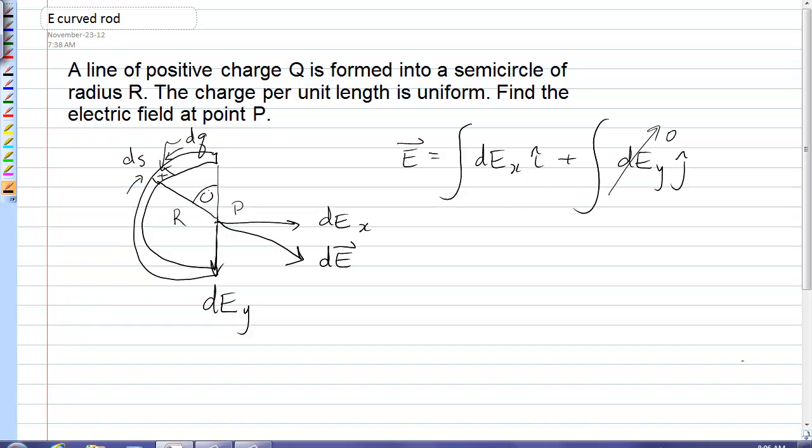Now I'm going to call this angle up here theta so that this angle down here is theta, which means dEx is in fact dE sine theta. So putting that into the integral I have my electric field will be i hat the integral of dE sine theta. And that dE is the dE as usual which is k dq over r squared, and then I have a sine theta.